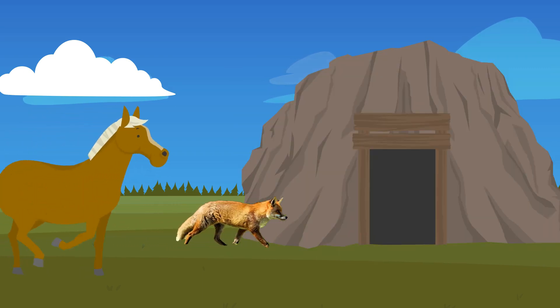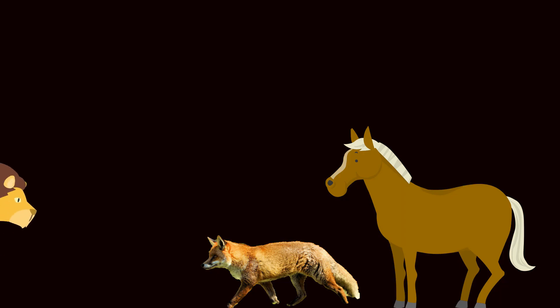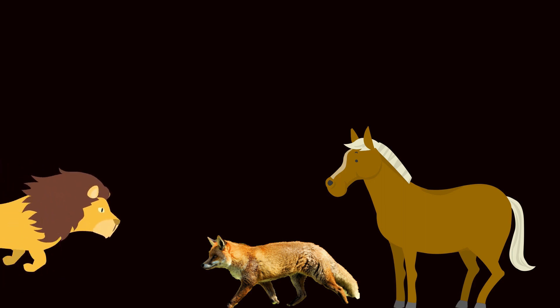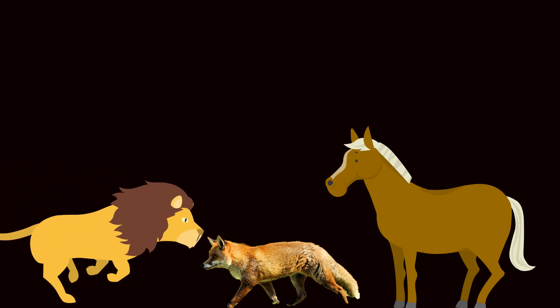So the fox led the donkey into a deep pit. But when the lion saw that the donkey was his for the taking, he first of all struck down the traitor fox.